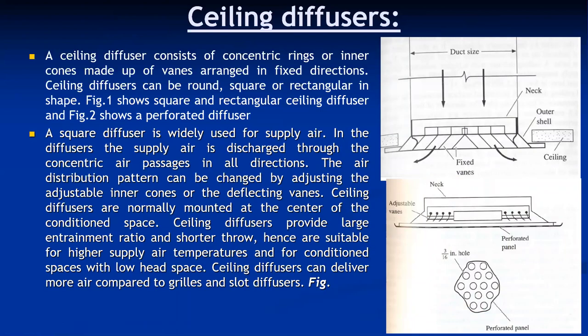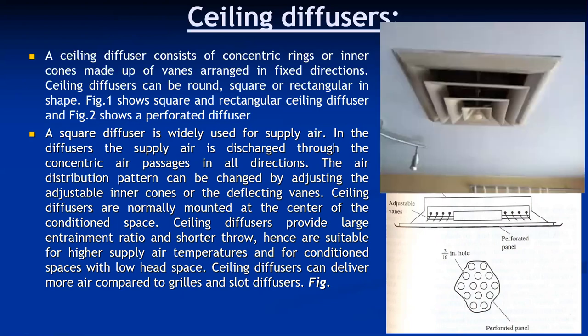Square diffuser is widely used for supply air. In the diffuser, the supply air discharges through the concentric air passages, and the air distribution pattern can be changed by adjusting the adjustable inner cones or deflecting the vanes. Ceiling diffusers have a greater spread and are normally mounted at the center of the conditioned space. They provide a large entrainment ratio and shorter throw, making them suitable for high supply air temperatures in conditioned spaces with low headspace.